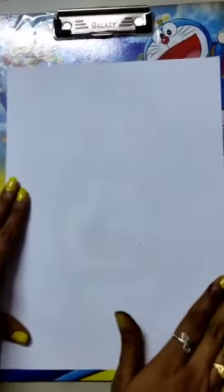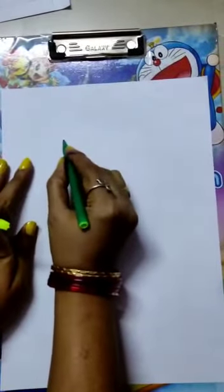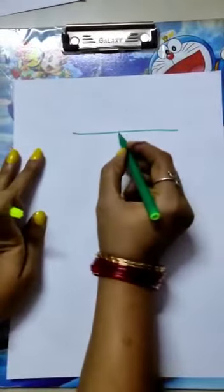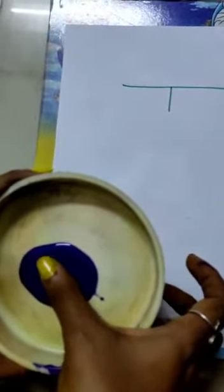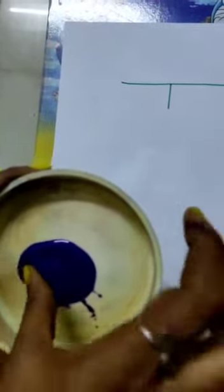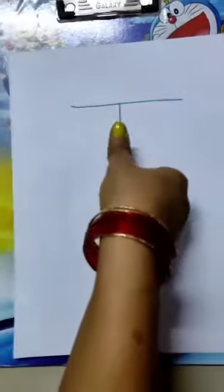Open your scrapbook and draw one line. Then take your thumb finger, dip it in the purple color, and place it here.